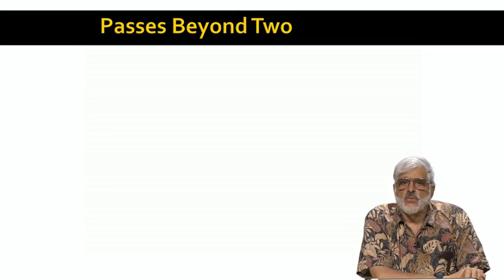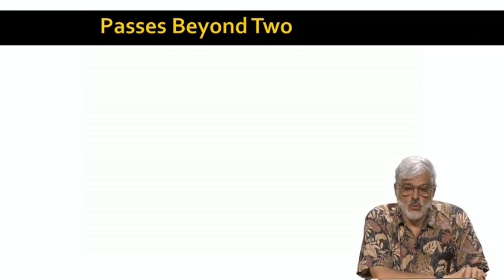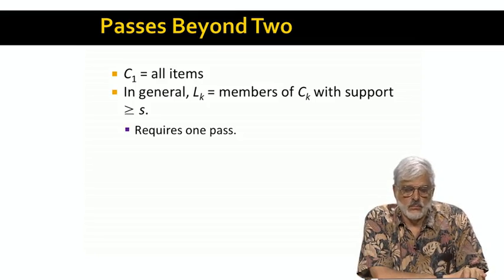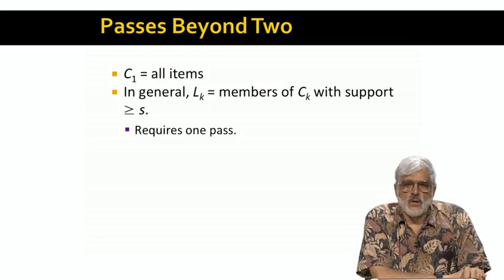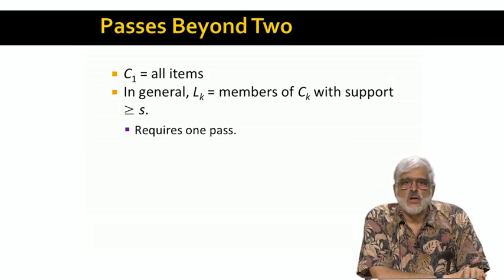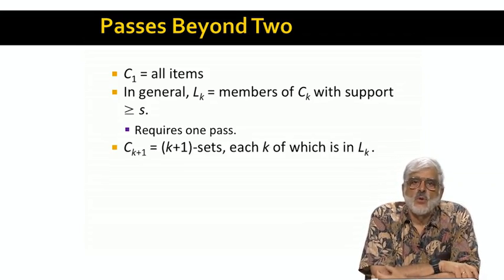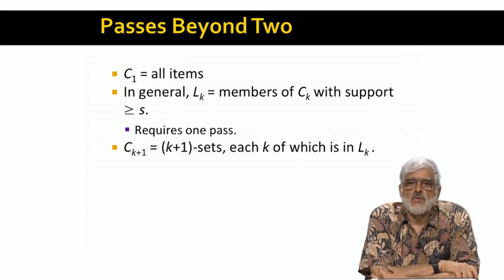We can describe the a priori algorithm for item sets of all sizes as an induction on K, the size of the item sets we construct. There is one pass for each K. The basis is that C1 is the set of all items — strictly speaking, C1 consists of all the singleton sets, each containing one item. Given the set CK, we construct LK by making a pass through the data and counting each set in CK. Those sets whose counts reach the threshold S become members of LK. The other part of the induction is how we construct C sub K+1 from LK: we look for sets of size K+1, each of whose subsets of size K — those you get by dropping one element — are in LK.